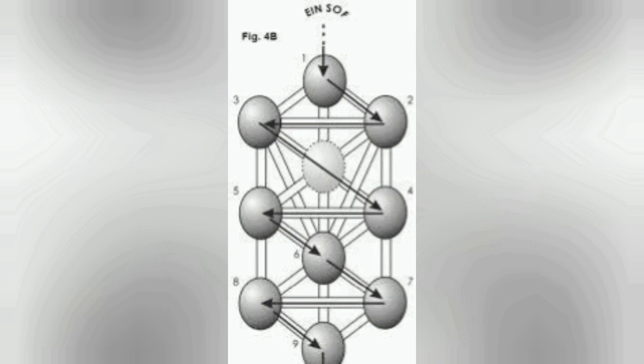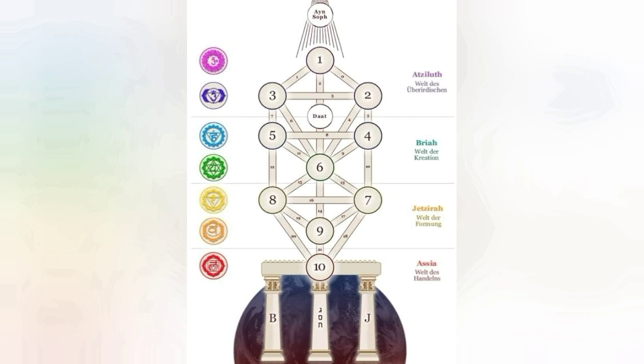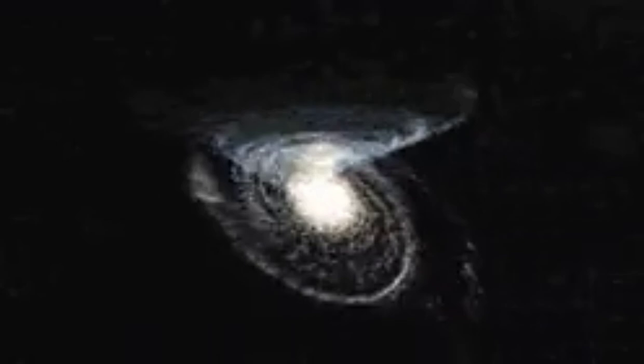A árvore da vida, entendida como uma espécie de mapa da criação, a representação gráfica da vida, consiste num diagrama onde estão representados os dez atributos, ou sefirotis, criadas por Deus para manifestar o universo em termos físicos e metafísicos. A árvore da vida também é dividida em três colunas.